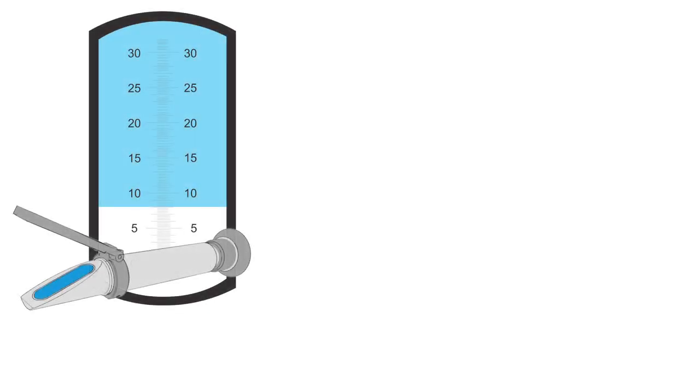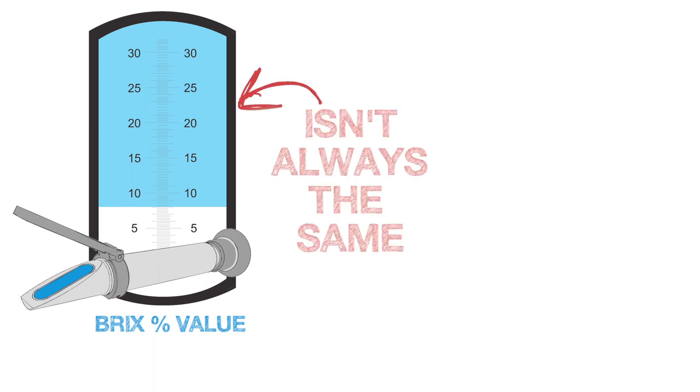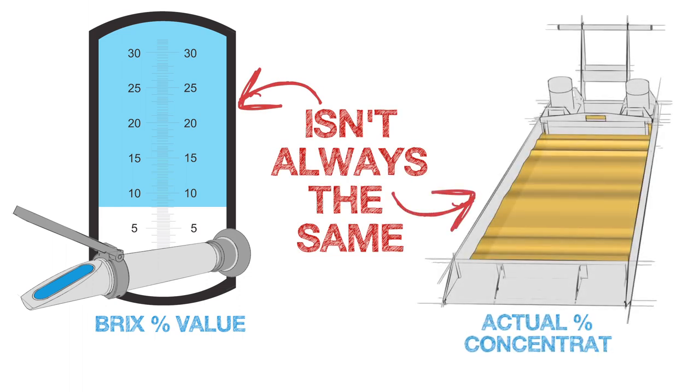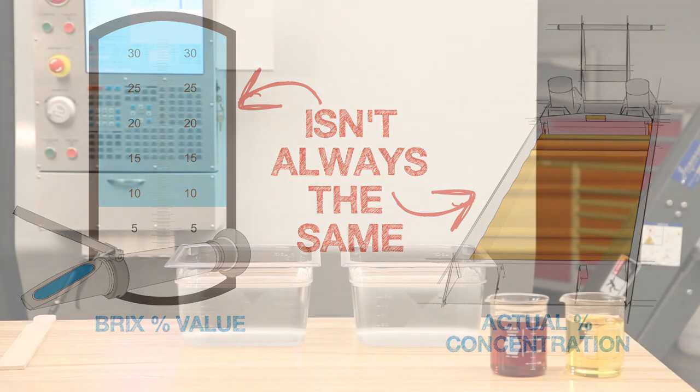The reading the refractometer displays is a BRICS percentage value. This value isn't always the same as the coolant's actual concentration.